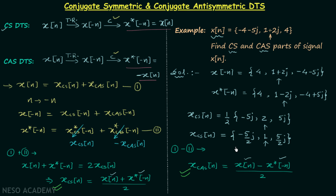Calculating the conjugate anti-symmetric part xcas(n) is homework for you. Once you have the answer, post it in the comment section. I will end this lecture here — see you in the next one.